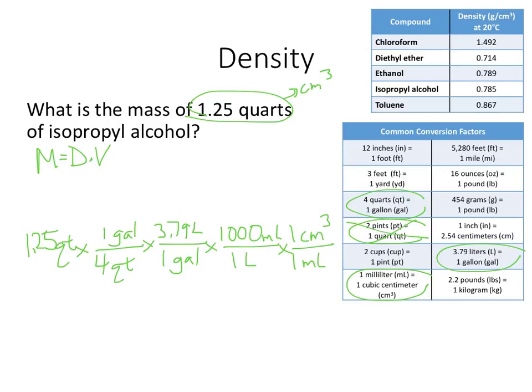So to get my quarts to centimeters cubed, that's 1.25 divided by 4 times 3.79 times 1,000, and I end up with 1184.375 centimeters cubed. Now only three of those are going to be significant, but I want to keep the entire number when I'm typing in my calculator. I only want to round at the end.